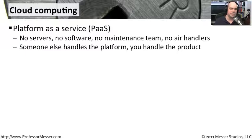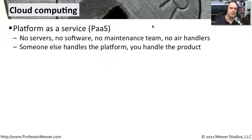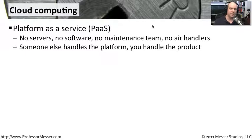One is something called Platform as a Service, abbreviated as PaaS. This means that you don't have any servers, you don't have any software, you don't have a maintenance team, you don't have a data center. Your entire systems that are providing services for your end users are completely self-contained somewhere else. You're relying on a third party to make sure that the resources you've created are now running on somebody else's platform out there in the cloud. You can really focus on your product and have somebody else handle all the IT, since you don't have those infrastructure concerns.